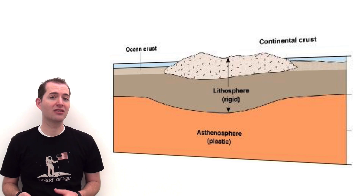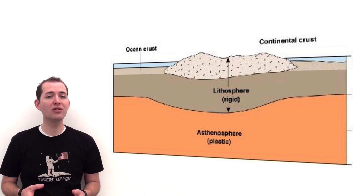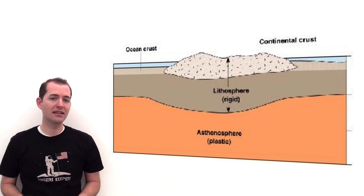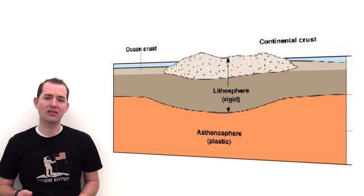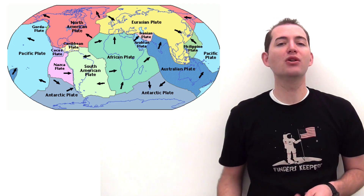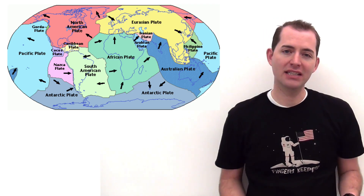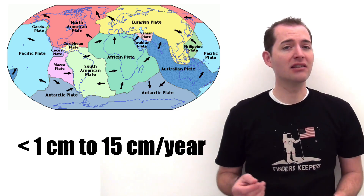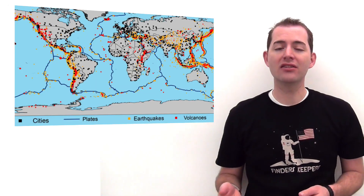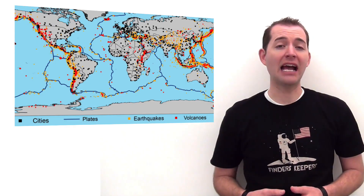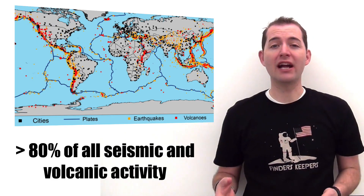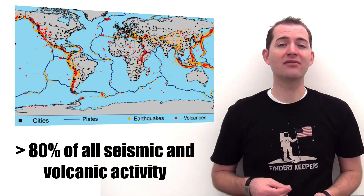The theory of plate tectonics states that the crust or the lithosphere moves on what's known as the asthenosphere, or the mantle. The lithosphere is generally less dense than the asthenosphere, which explains why it floats on top of it. Plates actually move a very small amount every year — ranging from less than 1 centimeter to 15 centimeters per year — and nearly all seismic and volcanic activity, over 80%, happens at plate boundaries or where plates meet.